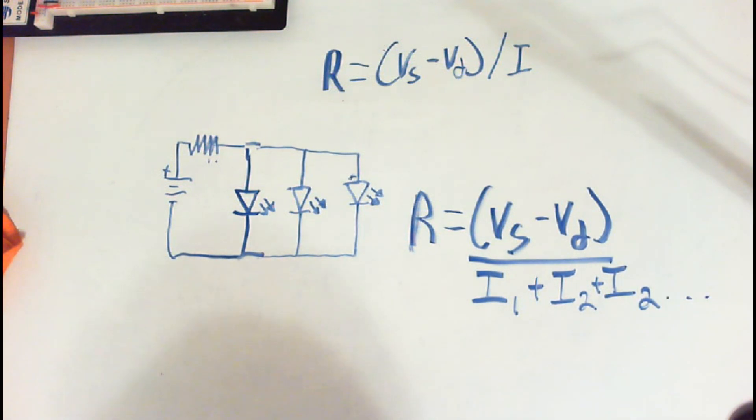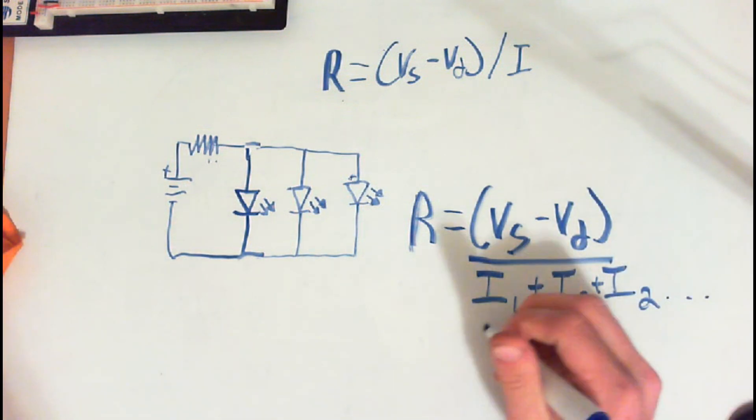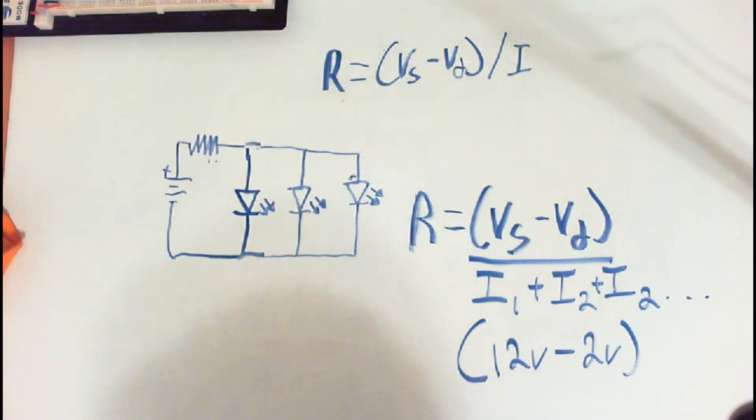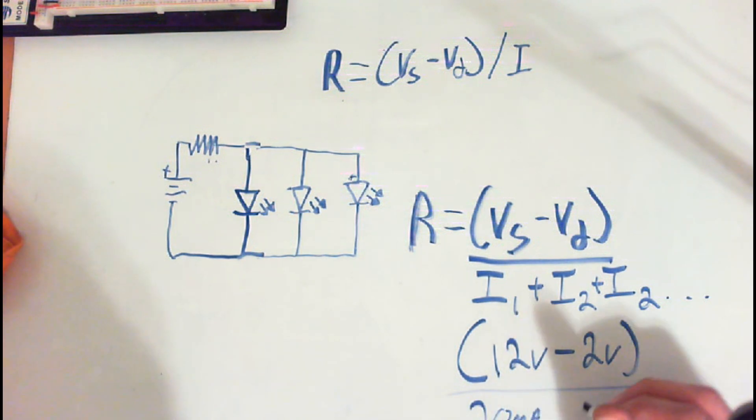So for this circuit here, since we have 3 LEDs, the brightness is this. It would be 12 volts subtract the 2 volt drop that each LED is going to go, because each leg of this is going to have 12 volts. And then we're going to take each one of our current, which is 20 milliamps, and add them together. Okay. So down here, this would be a total of 80 milliamps.